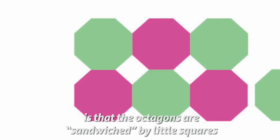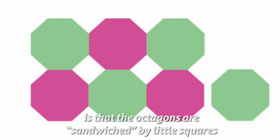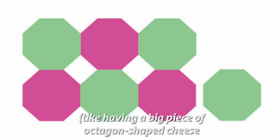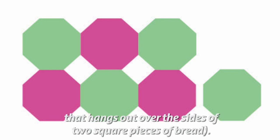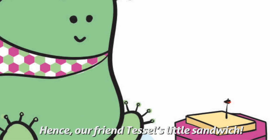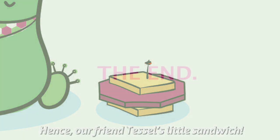Another way of saying it is that the octagons are sandwiched by the little squares — like having a big piece of octagon-shaped cheese that hangs out over the sides of two square pieces of bread. Hence our friend Tessell's little sandwich. The end.